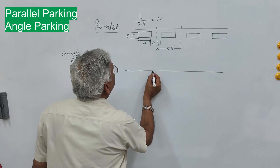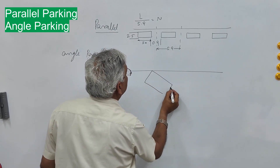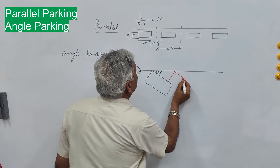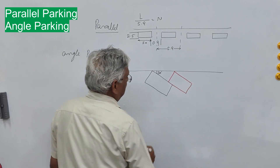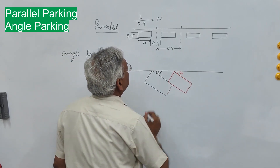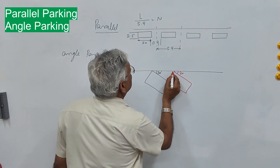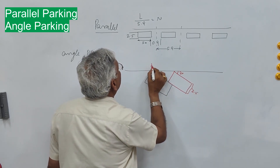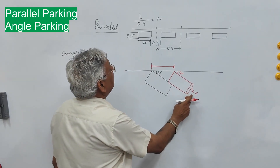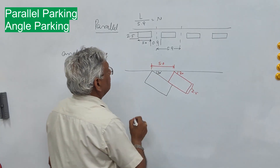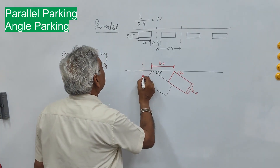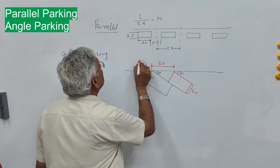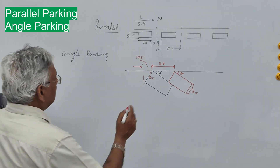For a vehicle parked at 30 degrees to the curb line, the vehicle width is 2.5 meter. The length along the curb occupied by each vehicle is 2.5 divided by sin 30, which is 5 meter. The extra distance for the first vehicle at this end is 2.5 meter, and since cos 30 gives about 2.165, half of that is approximately 1.25 meter.